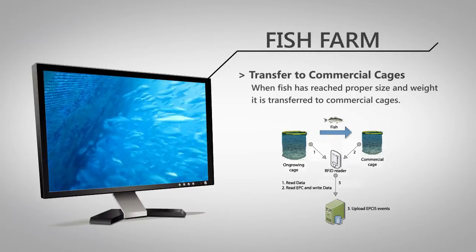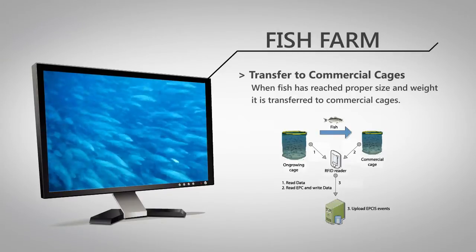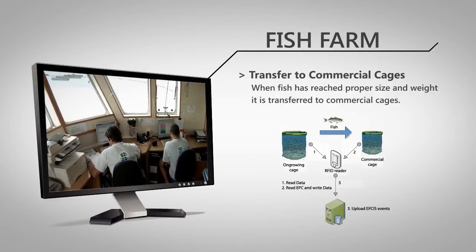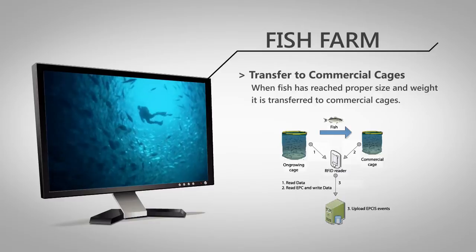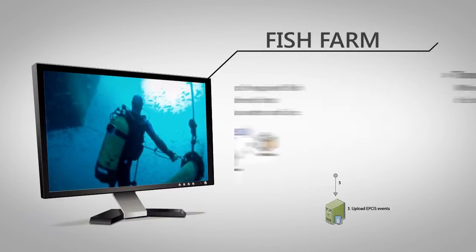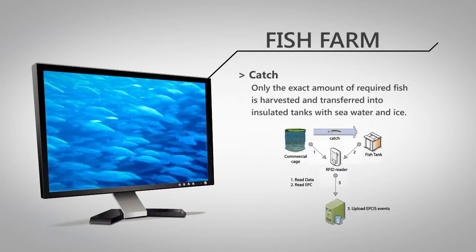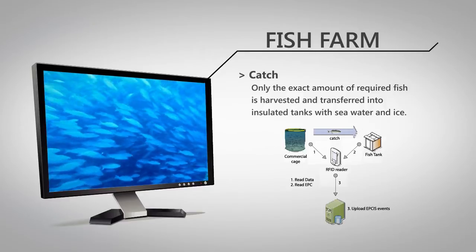Second, transfer to commercial cages. When fish has reached proper size and weight according to commercial needs, it is transferred from growing to commercial cages. Here, the handheld reader is used to identify both cages. The catching of the fish is done collecting only the exact amount required.